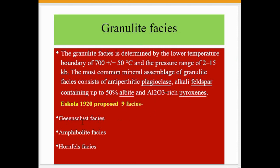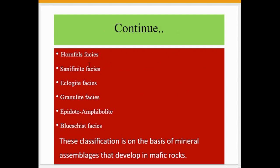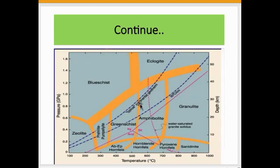Eskola (1920) proposed nine metamorphic facies: the granulite facies, amphibolite facies, hornfels facies, sanidine facies, eclogite facies, epidote-amphibolite facies, and blueschist facies, among others. This classification is based on the mineral assemblage developed in mafic rocks.